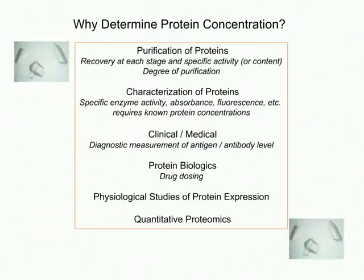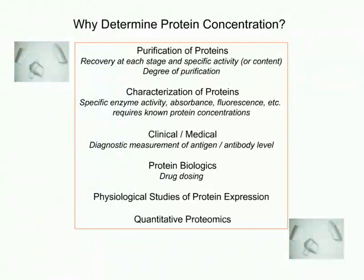Why do we want to determine protein concentration? In our lab, we purify proteins for characterization and structural determination, so we need robust purification schemes with well-determined mass balance to develop reproducible methodologies. Once purified, we need specific activities and biophysical properties, which require known protein concentrations. In clinical or medical fields, diagnostic measurements of antibodies and antigens are needed, and in biotech, very accurate methods are required for drug dosing.